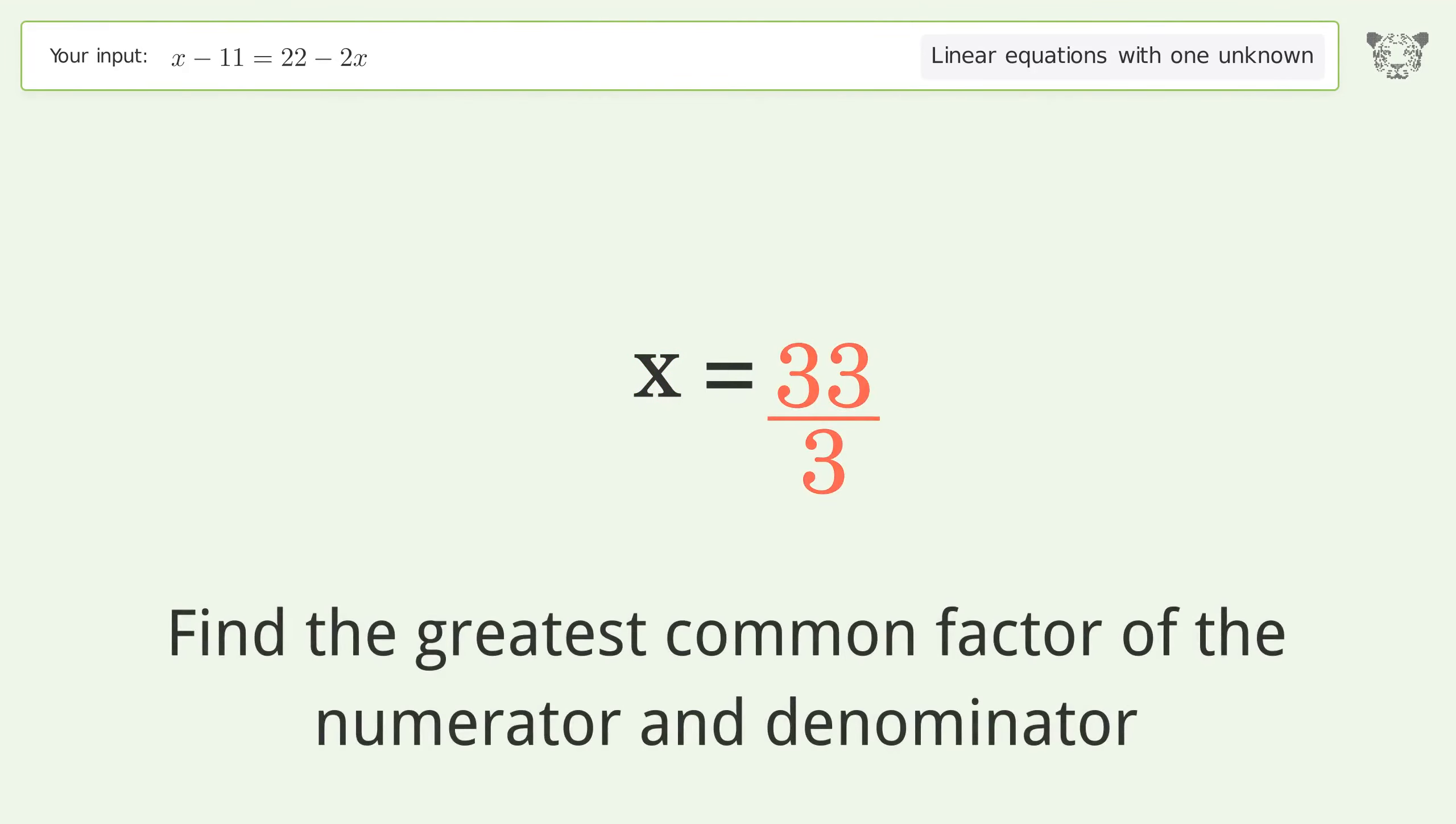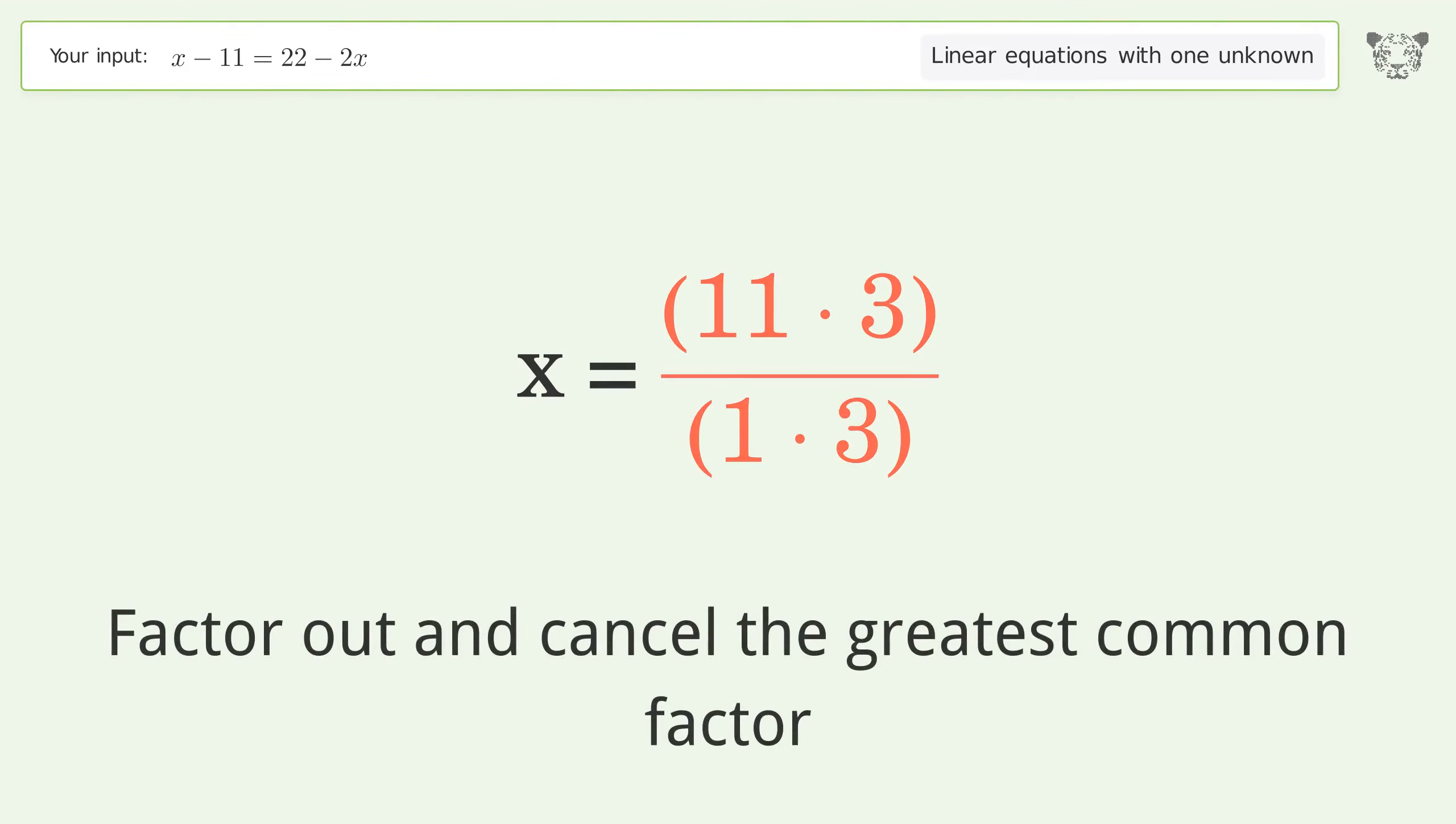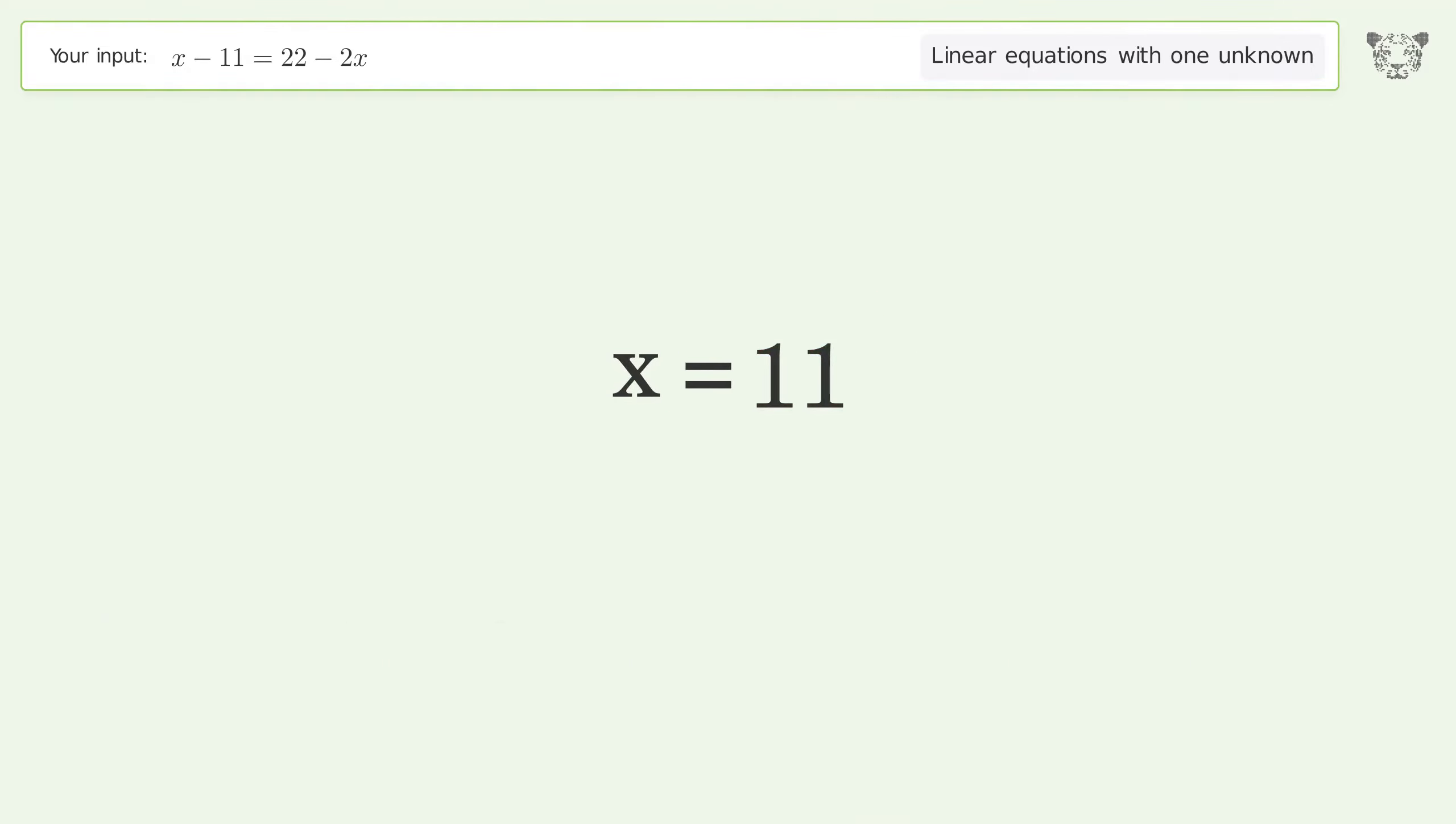Find the greatest common factor of the numerator and denominator. Factor out and cancel the greatest common factor. And so the final result is x equals 11.